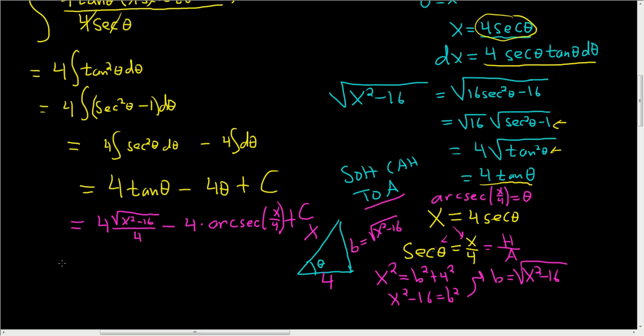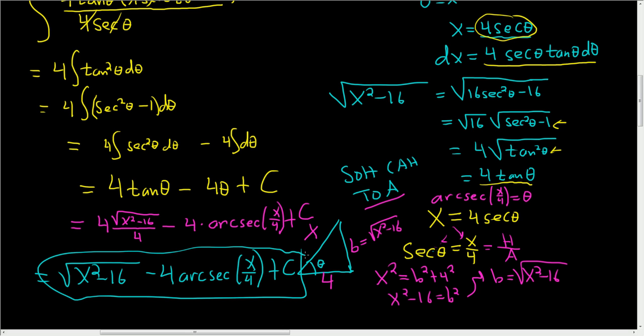The final answer is the square root of x squared minus 16 minus 4 arc secant of x over 4 plus a constant C. And that's it.